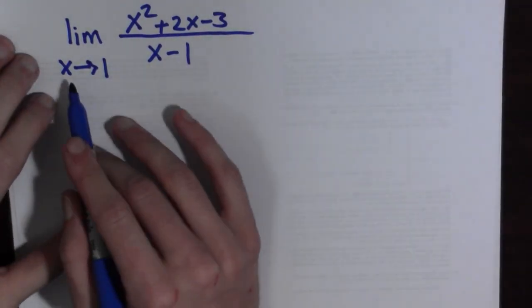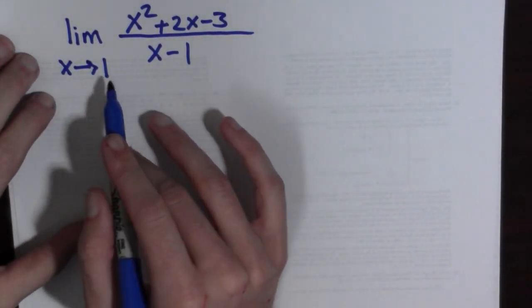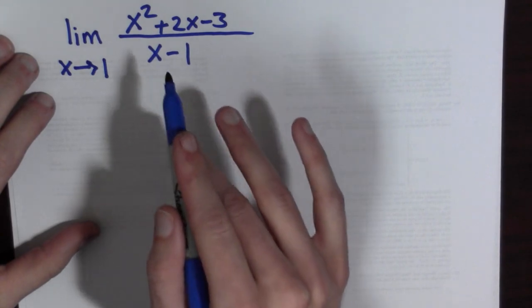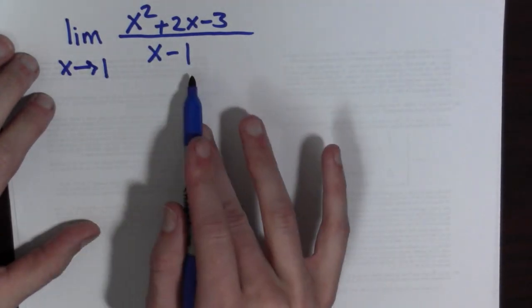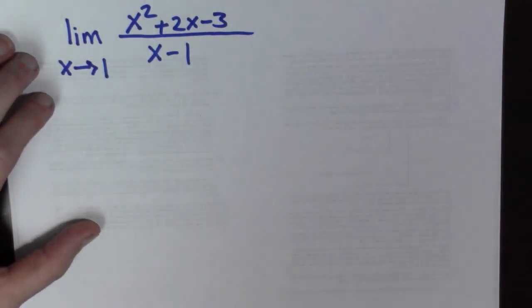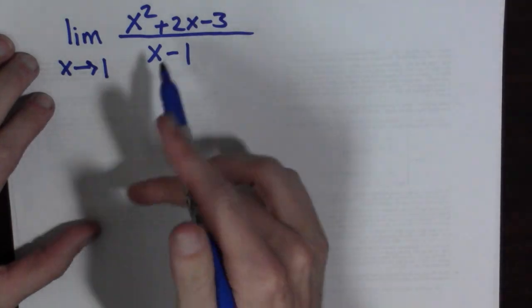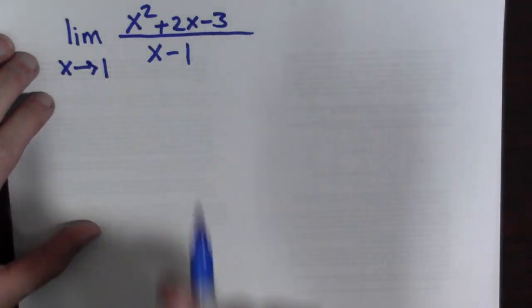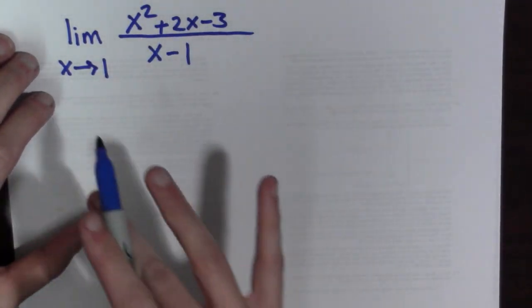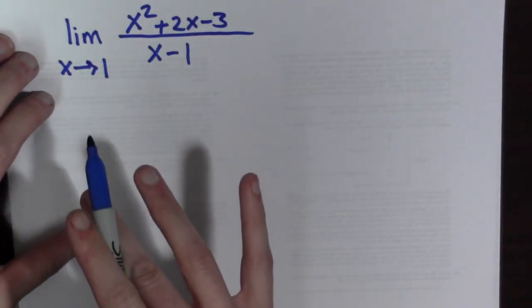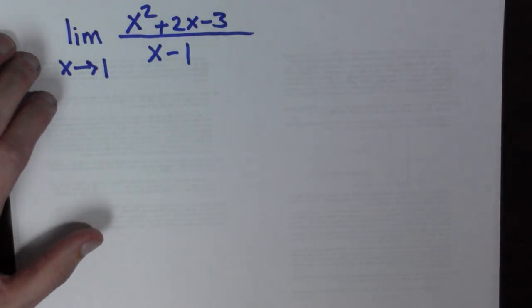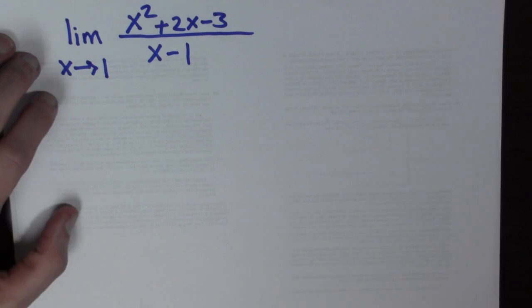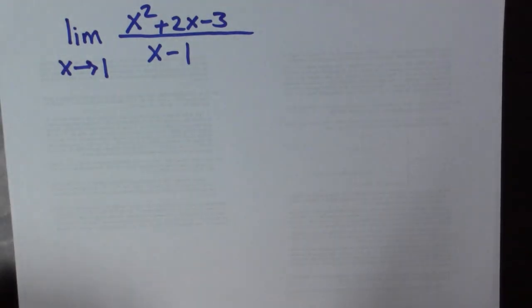Here we have the limit as x goes to 1 of x squared plus 2x minus 3, all divided by x minus 1. We'd really like to be able to evaluate this at 1, but we cannot because x minus 1 is the denominator, and if we plug in 1 for x we get a 0 in the denominator, which is no good.